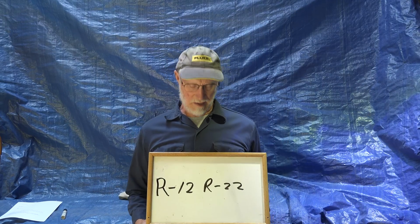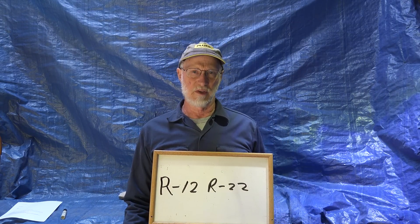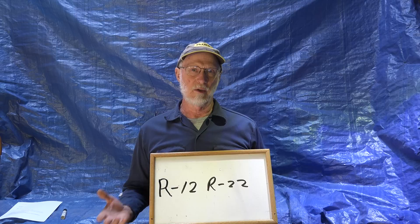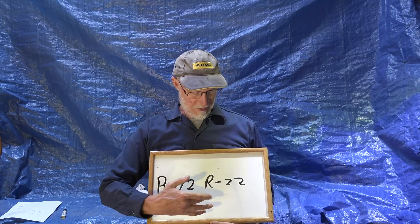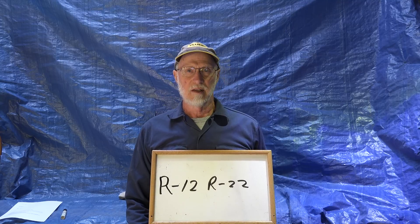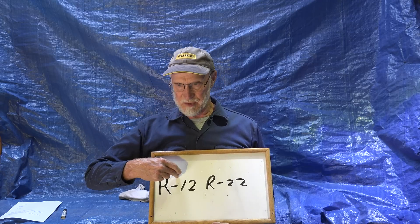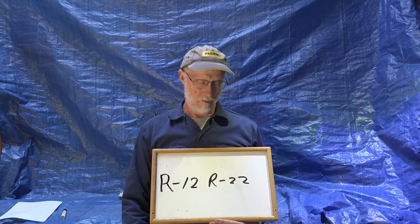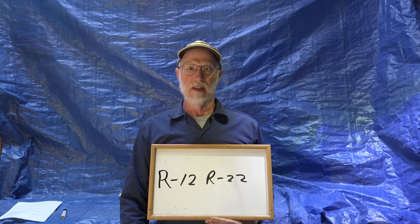We're going to talk about the numbering system for refrigerants — the numbers from zero to about 50. R12 and R22 are the most common. Both of these are sort of banned now. R12 is a CFC (chlorinated fluorocarbon) and R22 is an HCFC (halogenated fluorocarbon).